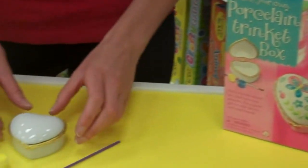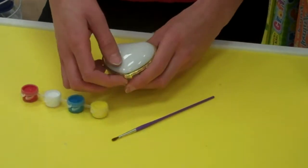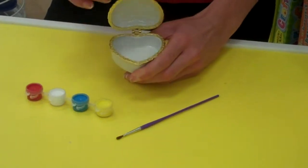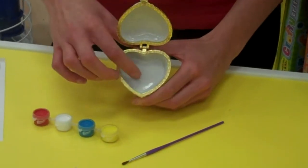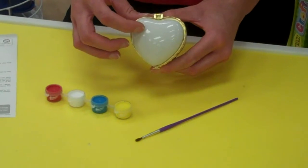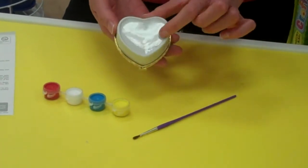Let me show you what you get inside. You get your porcelain trinket box. It's in the shape of a heart and it actually opens up so you can paint the inside, you can paint the outside and you can also paint the top. You can even put your name at the bottom.